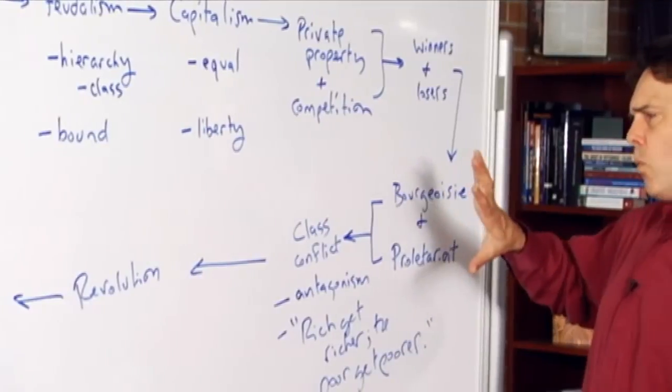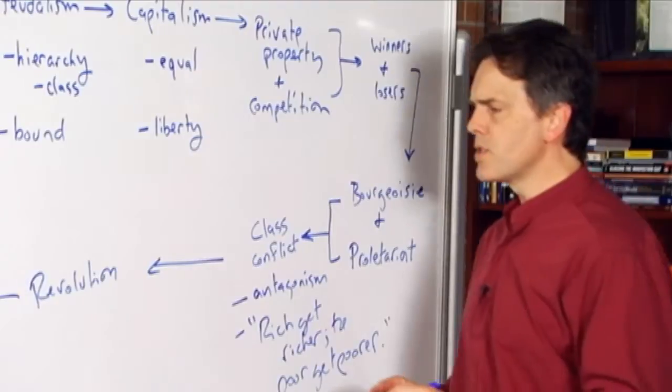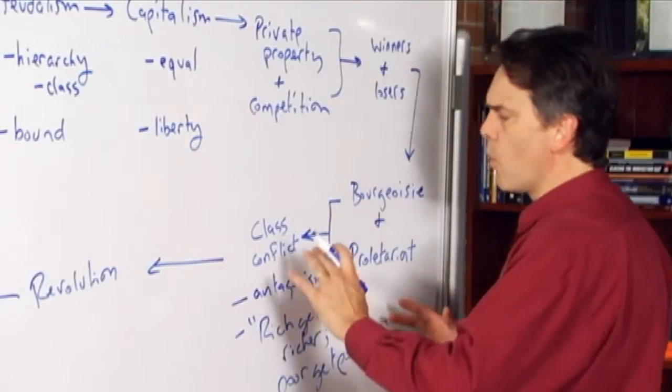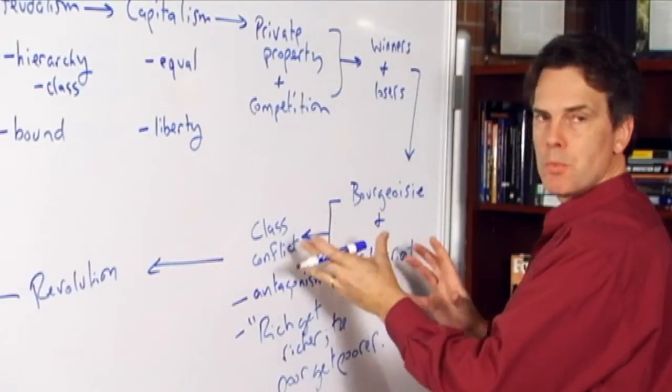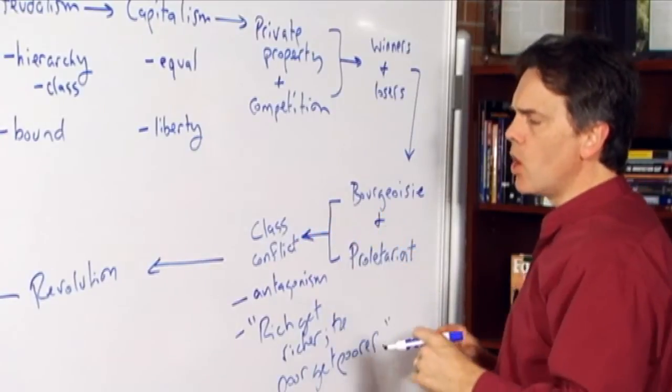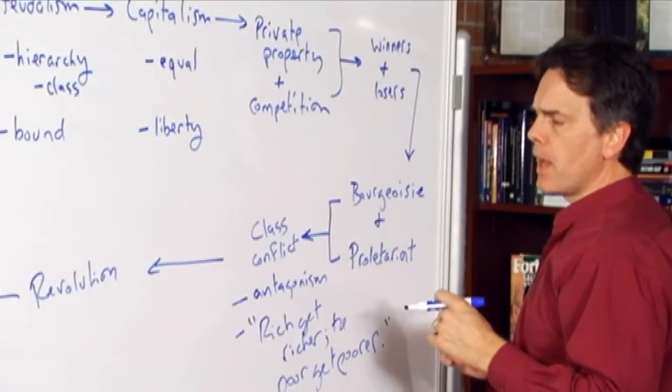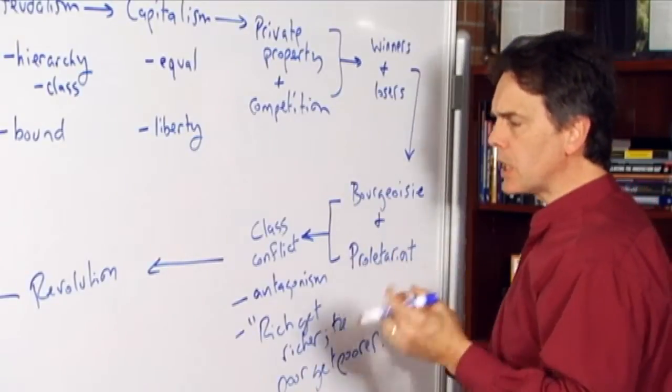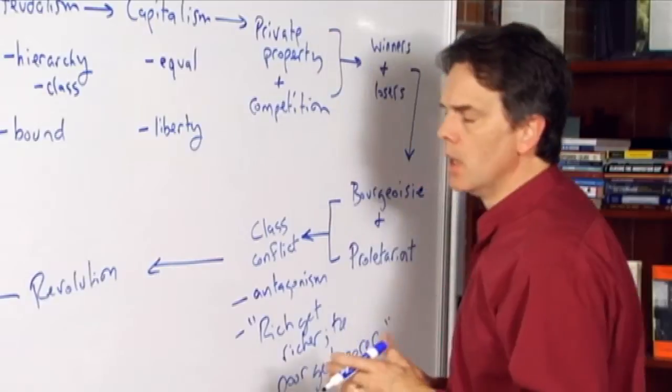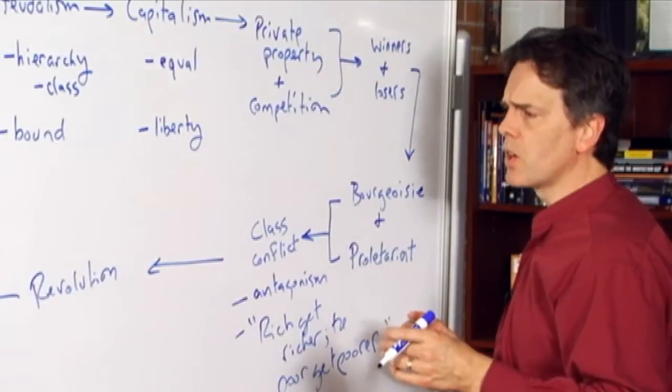But what the Marxists of the 19th century and the early 20th century in particular are concerned with is the fact that while the antagonisms are developing, and while the class conflict is going along, it's not going along quickly enough for them, and despite a number of predictions of imminent revolution, a number of those revolutions fizzled out or did not materialize.